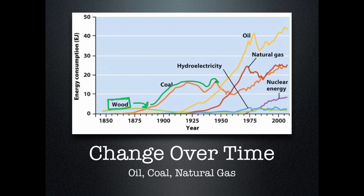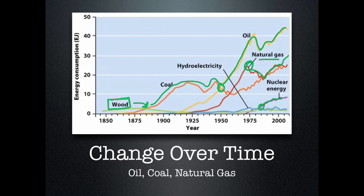Coal was dominant until about the 1940s or 50s, when oil extraction became really profitable and easy, and oil started to become our major energy source. In the 1970s, there was an oil crisis and natural gas started to become a bigger player. Today, natural gas consumption is going way up because of fracking and increased access to those resources. Nuclear energy also started coming on the scene in the late 70s and early 80s. This shows how a country's energy portfolio changes over time.